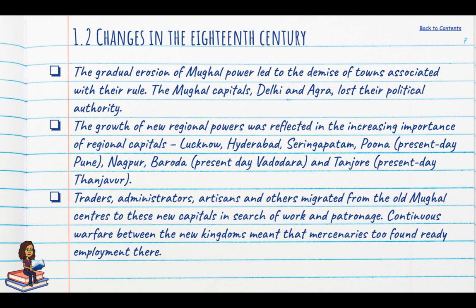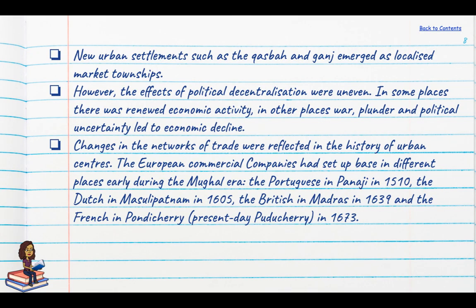Many who had been associated with the Mughal court were now migrating towards these regional cities in search of better opportunities. There were also new urban settlements called the Kasbah and the Ganj — generally localised market townships. Using Delhi as an example, we have places like Pahar Ganj and Darya Ganj, which even today are market centres.